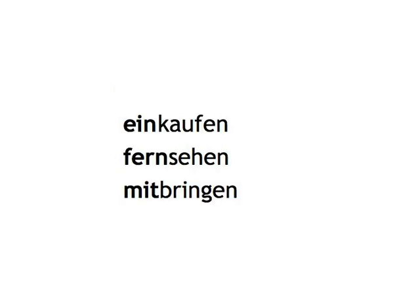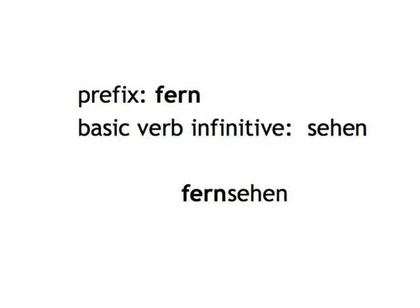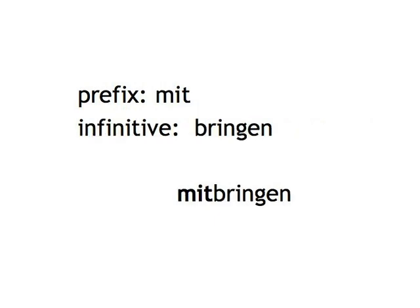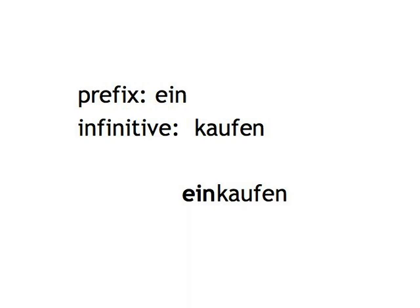Let's start with separable verbs like 'einkaufen,' 'fernsehen,' and 'mitbringen.' They really consist of two parts: a prefix — something fixed to the front of the verb, like 'fern' — and a basic verb infinitive like 'sehen,' and the resulting verb is 'fernsehen,' with the stress on the prefix 'fern.' In the same way, 'mit' plus 'bringen' is 'mitbringen,' and 'ein' plus 'kaufen' is 'einkaufen.' Instead of the two English verbs 'to buy' and 'to shop,' we play German-language Lego — 'kaufen,' 'einkaufen.' Neat, isn't it?